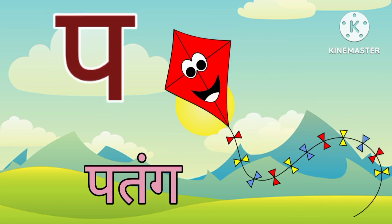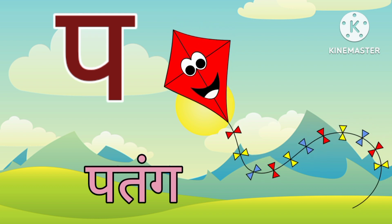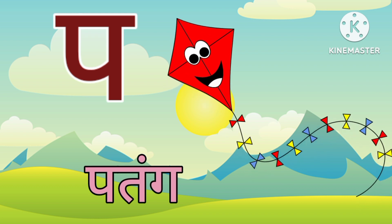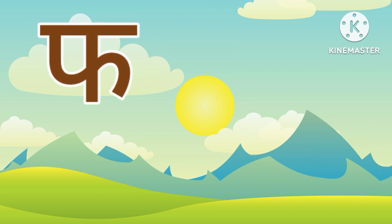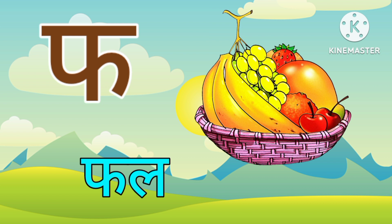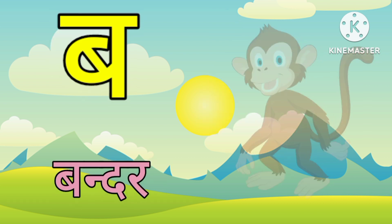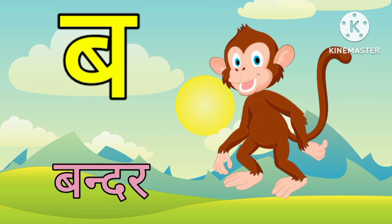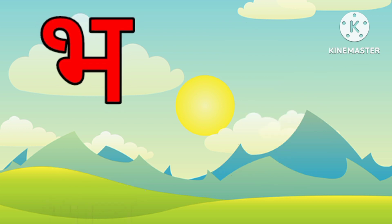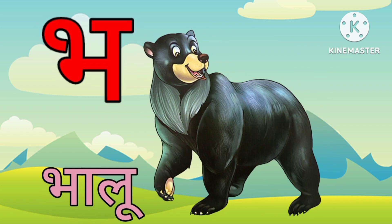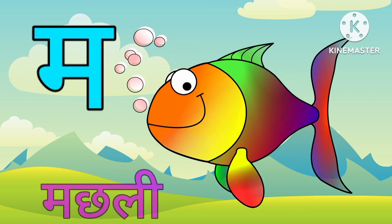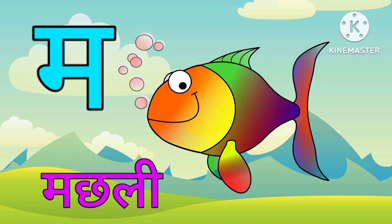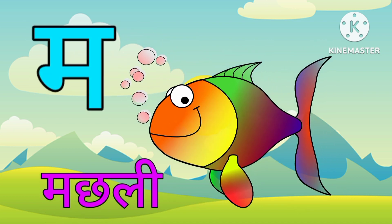प, प से पतंग। फ, फ से फल। ब, ब से बंदर। भ, भ से भालू। मा से मचली।